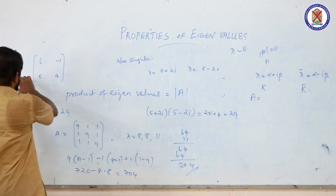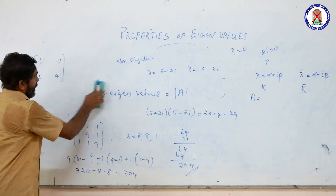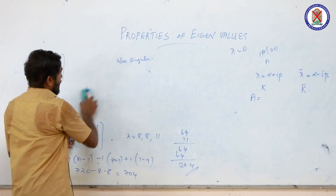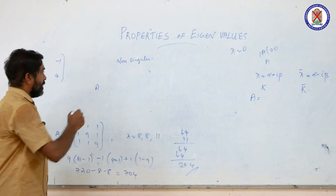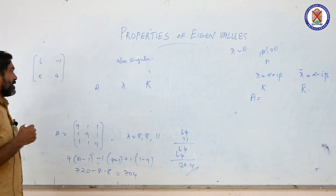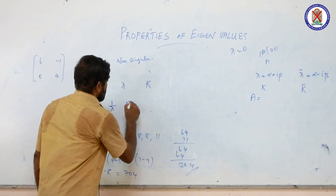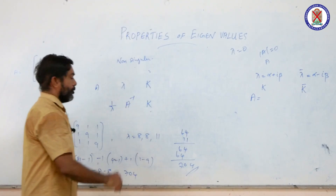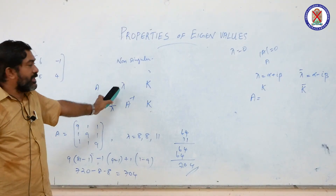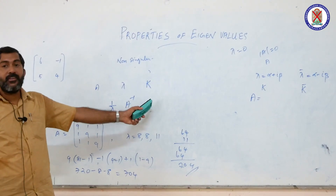Both example matrices are non-singular because lambda equal to 0 is not an eigenvalue. Another property: if A is a non-singular matrix and lambda is an eigenvalue of A with eigenvector K, then 1/lambda is an eigenvalue of A inverse with the same eigenvector K.